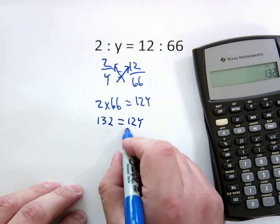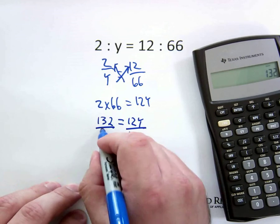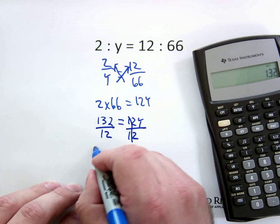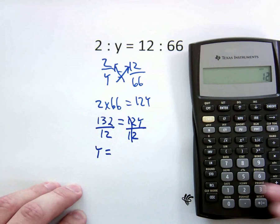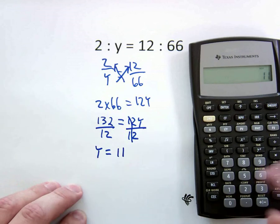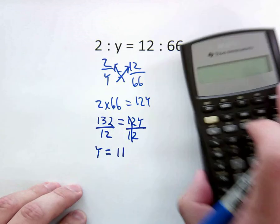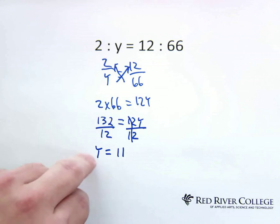So now what we want to do is just divide by 12. That cancels that. And so 132 divided by the 12 gives us 11. So 2 to 11 is equal to 12 to 66.